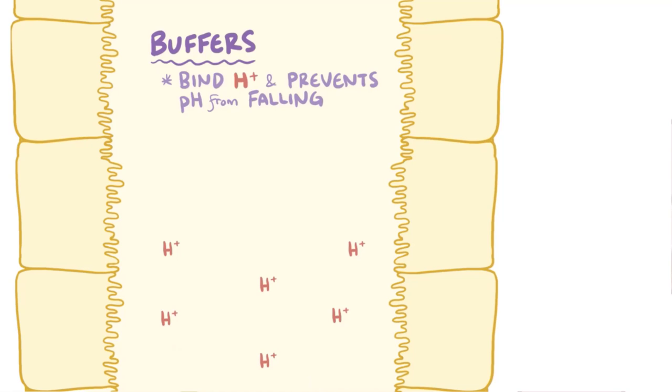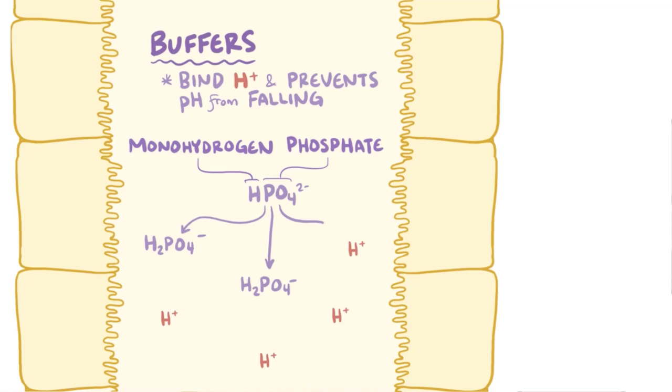A second buffer system uses phosphate. Monohydrogen phosphate, or HPO42-, enters the tubule from the plasma. Monohydrogen phosphate is poorly reabsorbed from the tubules, so it ends up concentrating there. It acts as a buffer by combining with secreted hydrogen ions to form dihydrogen phosphate, or H2PO4-, which is then excreted in the urine.